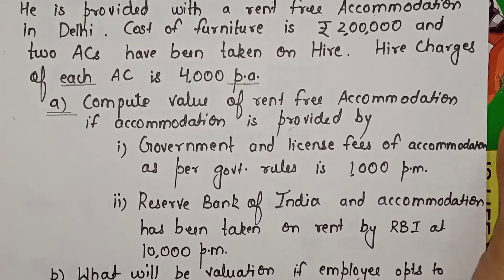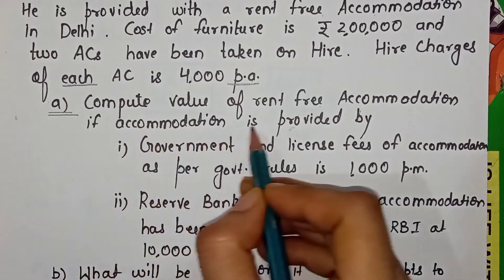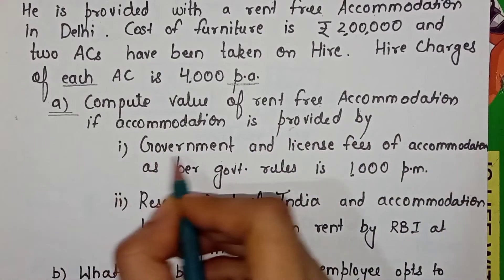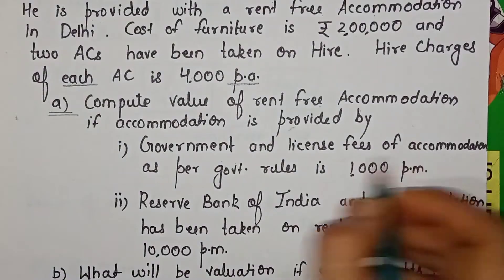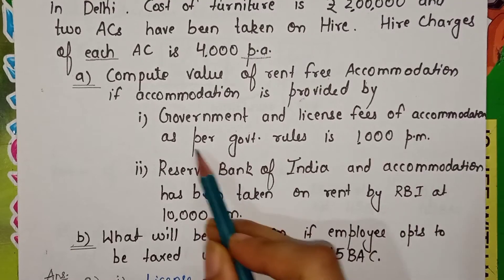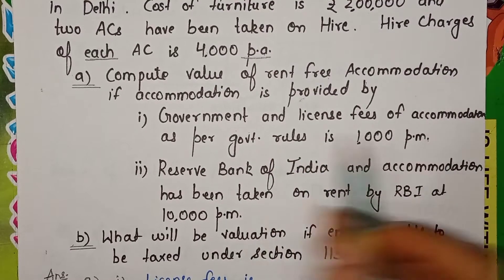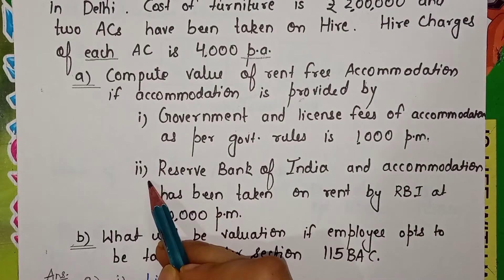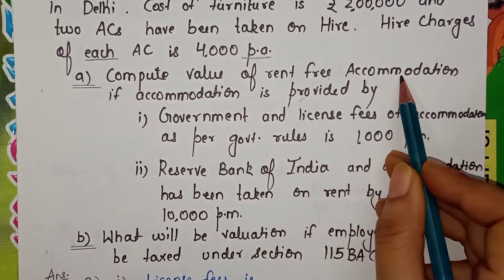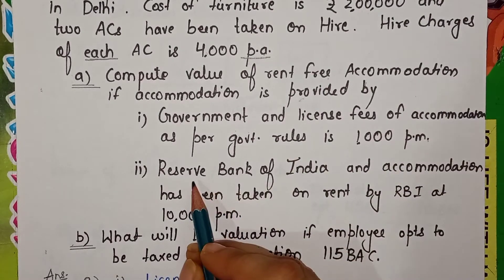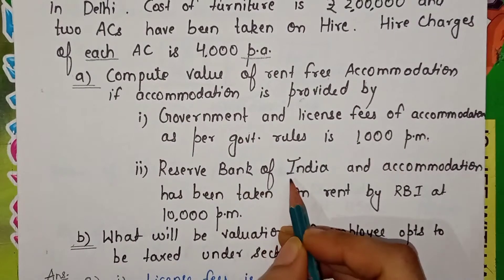We are asked to compute the value of rent-free accommodation in two situations. Situation 1: accommodation is provided by the government, and the license fee of accommodation as per government rules is 1,000 per month. Situation 2: accommodation is provided by the Reserve Bank of India, with RBI having taken the accommodation on rent at 10,000 per month.